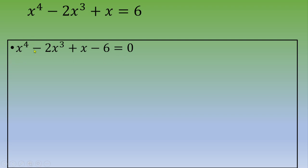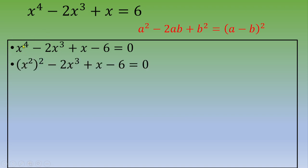Notice that the first term x⁴ has an even exponent, and we have -2x³. We can use the remarkable identity a² - 2ab + b² = (a - b)². So instead of writing x⁴, we write (x²)², and the second term -2x³ can be written as -2·x²·x.